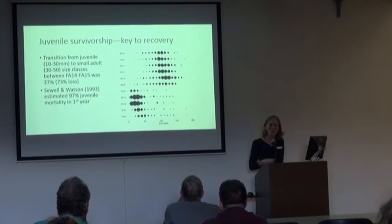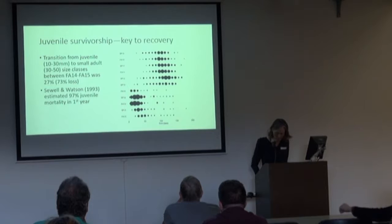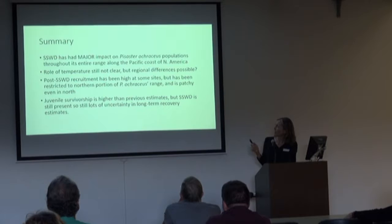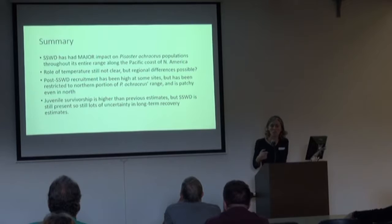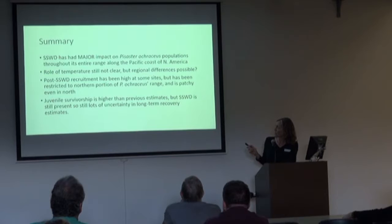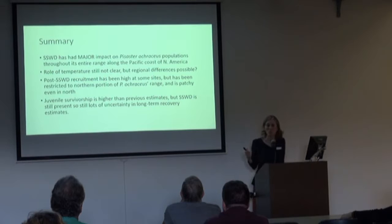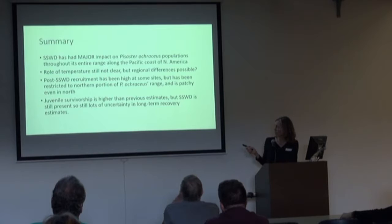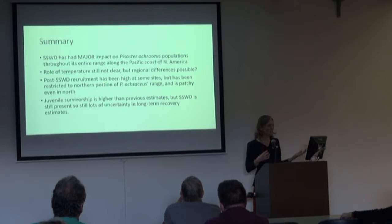That survivorship finding isn't something we're seeing everywhere, but it's something we're able to follow with these size data. To summarize the broad patterns: sea star wasting disease has had a major impact on ochre star populations throughout its entire range along the Pacific coast of North America. The role of temperature is still somewhat unclear — it seems to be important in some areas and maybe not as much in others. Recruitment post sea star wasting disease has been relatively high at some sites, but has been restricted largely to the northern portion of the range and is patchy even in the north. As of now, juvenile survivorship rates are higher than previous estimates in at least some areas, but the disease is still around, so it remains to be seen whether these individuals survive long term.